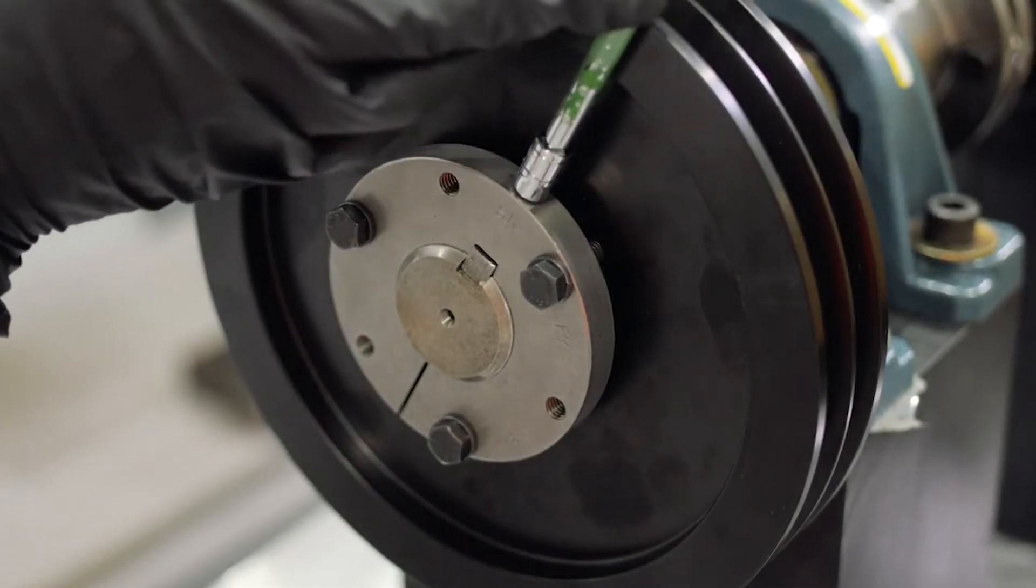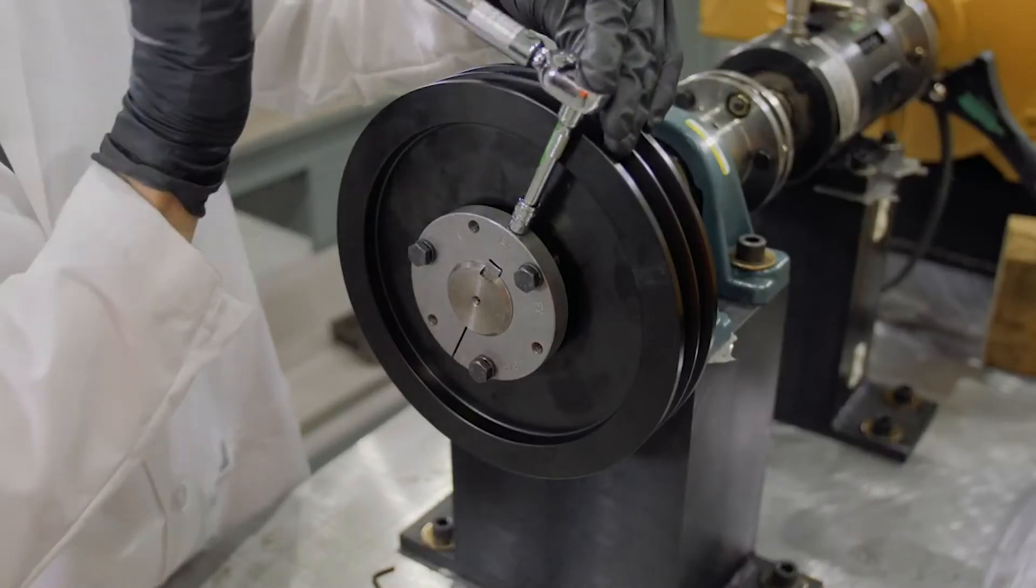Tighten the set screw over the keyway using a torque wrench to the value shown in the instruction manual.